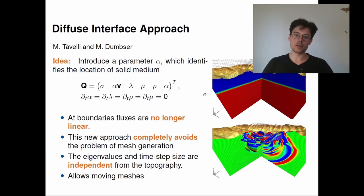The second approach is the diffuse interface approach. Here topography is not modeled by the mesh, but by a characteristic function alpha. This alpha is just a function between one and zero. For one it models a solid medium and for zero it models vacuum. Then we have a transition zone between one and zero. And at the boundaries, fluxes we use are no longer linear. The whole thing has the advantage that it completely avoids the problem of mesh generation. On the other hand, the whole PDE becomes non-linear, which makes it more expensive for us to compute. Also very nice is that the eigenvalues and the time step size are now independent from topography.